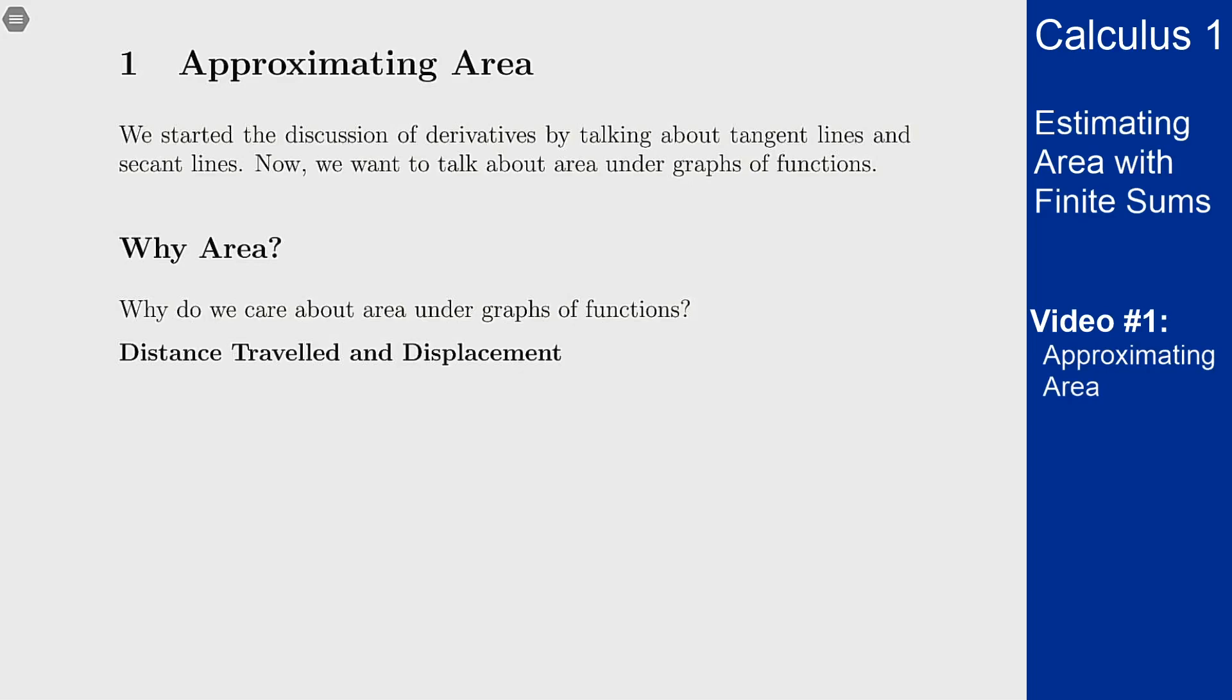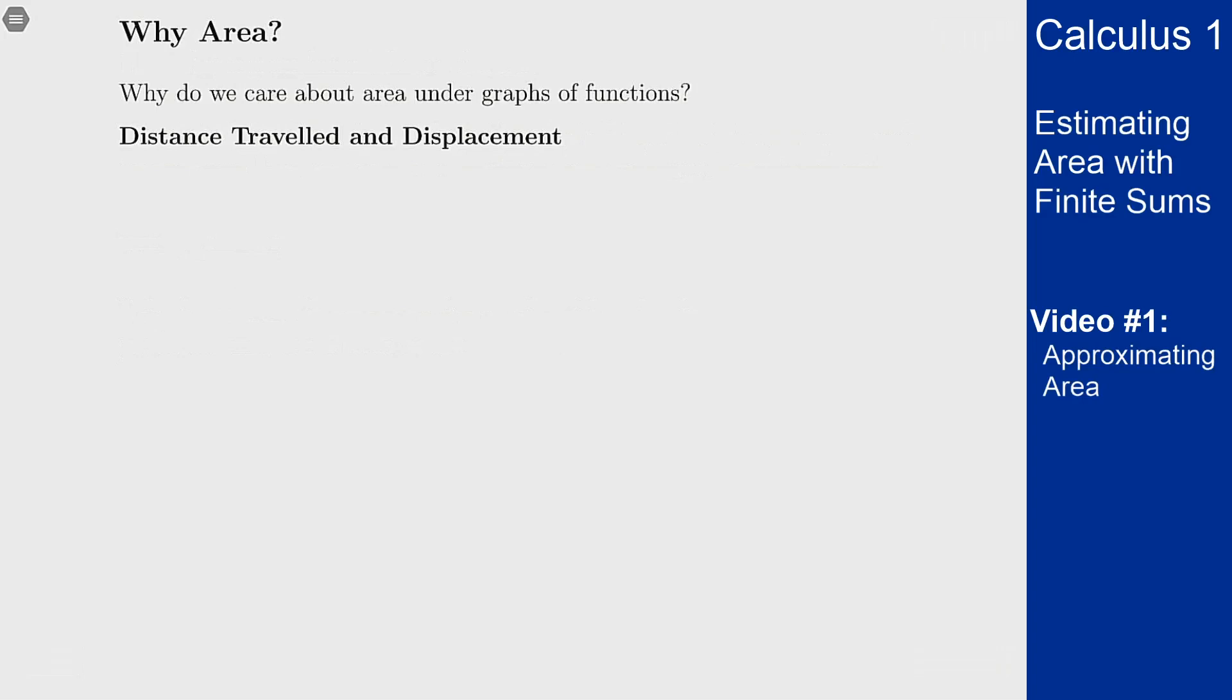The first is distance traveled and displacement. The idea here is that if I drive at a constant speed I can determine how far I've traveled by just multiplying my speed by the amount of time I've been driving at that speed.